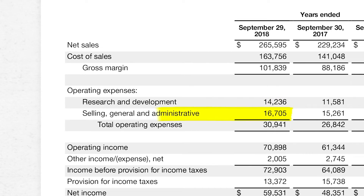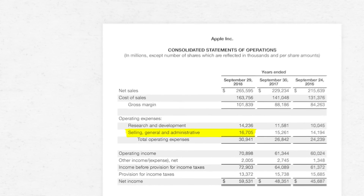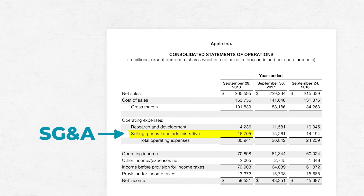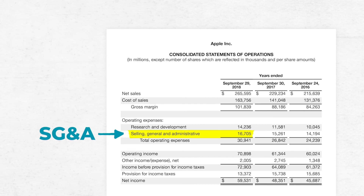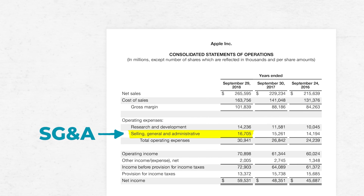Apple spent $16,705,000,000 on selling, general, and administrative expenses. You'll likely hear this referred to as SG&A for short. It includes payroll expenses like the CEO and other executive salaries, but it also includes non-payroll expenses like office supplies, rent, and marketing. These costs are generally fixed, meaning they don't vary directly with sales volume. So if Apple sells another product and increases revenue, operating expenses may not change at all.